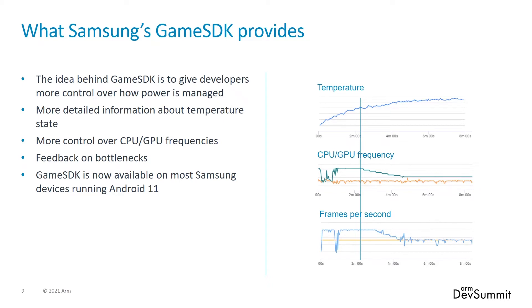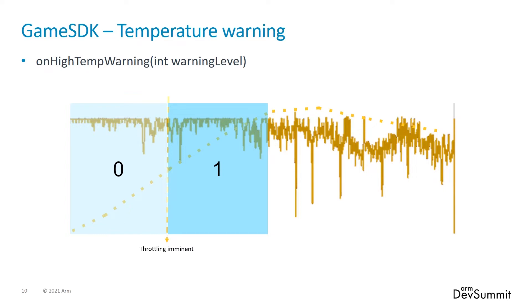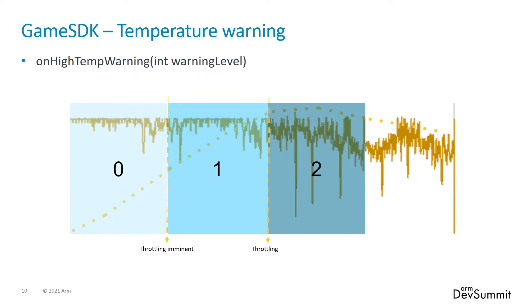The first part of the API for temperature is a warning level to let you know about any significant changes in temperature. You register to get a callback from the API. When a game starts, the device will most likely be at a low temperature where peak performance can be used — warning level 0. As the device heats up to a certain level, the API goes to warning level 1, meaning throttling is imminent. At this point you should reduce CPU and GPU load to prevent the device getting hotter and triggering level 2. At level 2, Game SDK will start to throttle the CPU and GPU to get temperature under control, and stability suffers. It is much better for the game to make changes to reduce load than to let Game SDK do it.